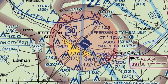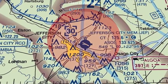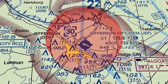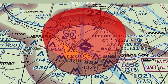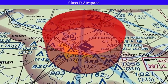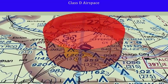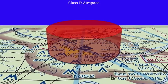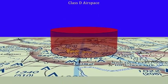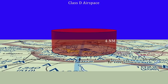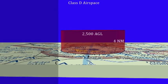A Class D airspace area is designated at smaller airports having sufficient traffic volume to necessitate an air traffic control tower. It normally extends 4 nautical miles from the primary airport, from the surface up to 2,500 feet above the ground.